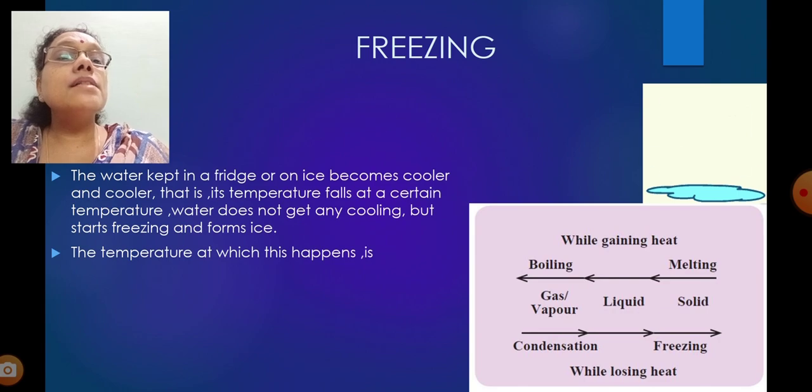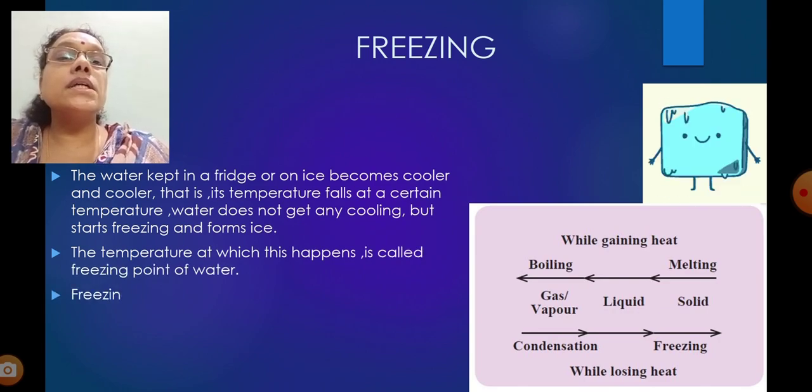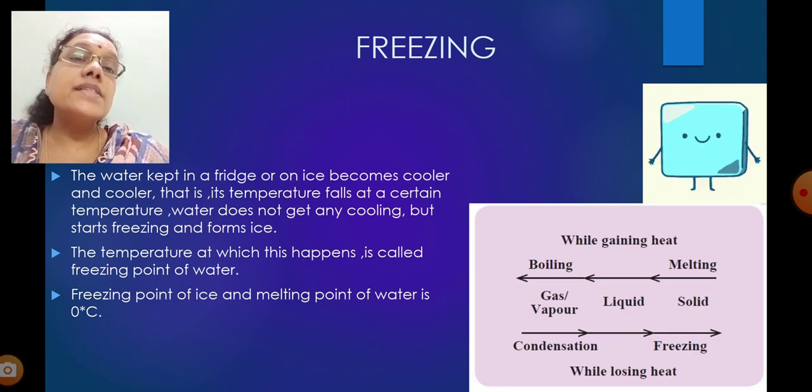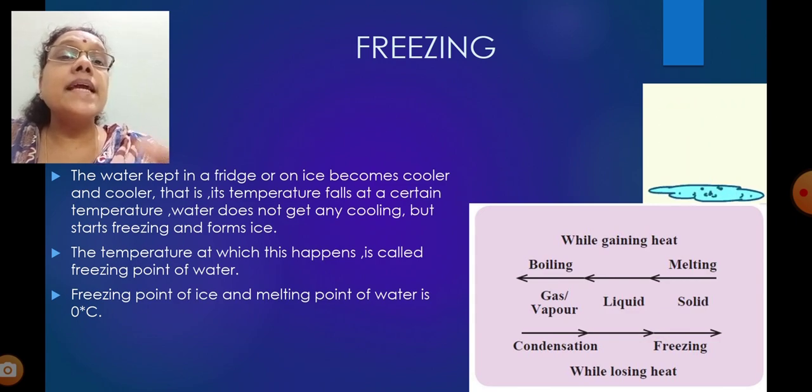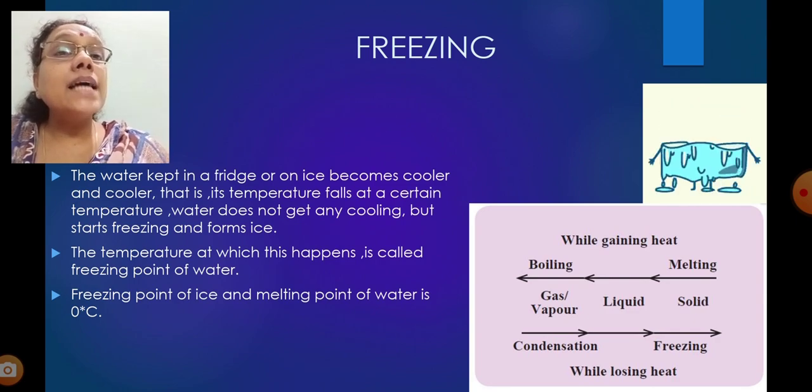The temperature at which this happens is called freezing point of water. Freezing point of ice and melting point of water is 0 degree Celsius. Freezing point of ice and melting point of water both are the same, 0 degree Celsius. At 0 degree Celsius, water turns to ice. At 0 degree Celsius, ice melts also.